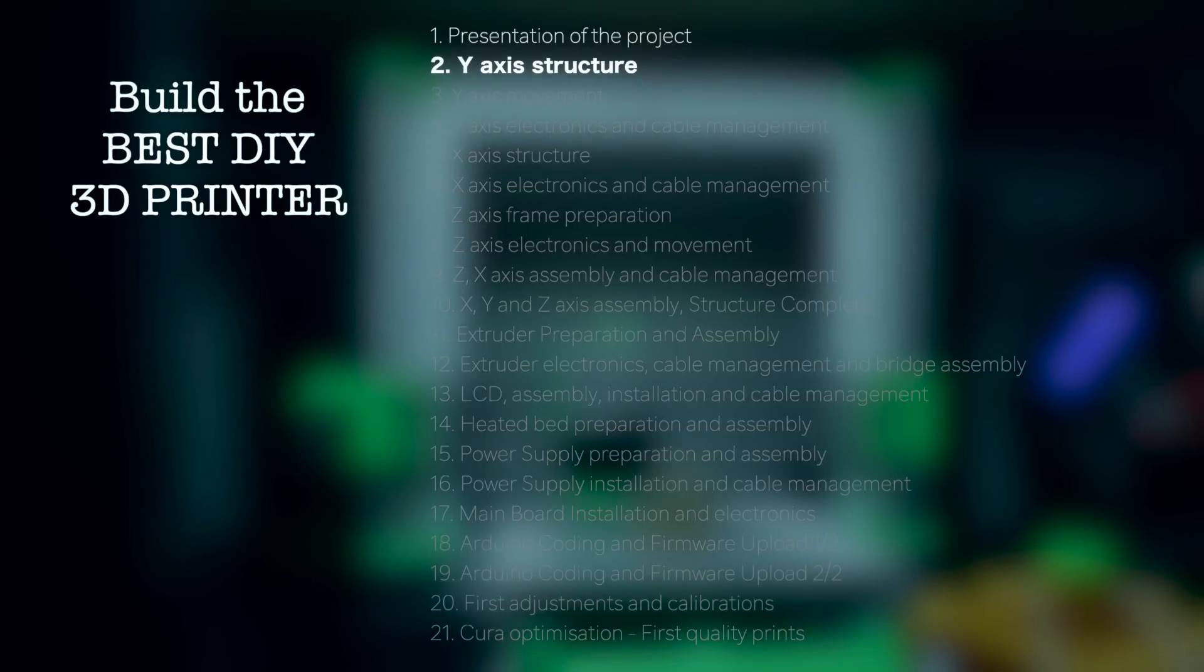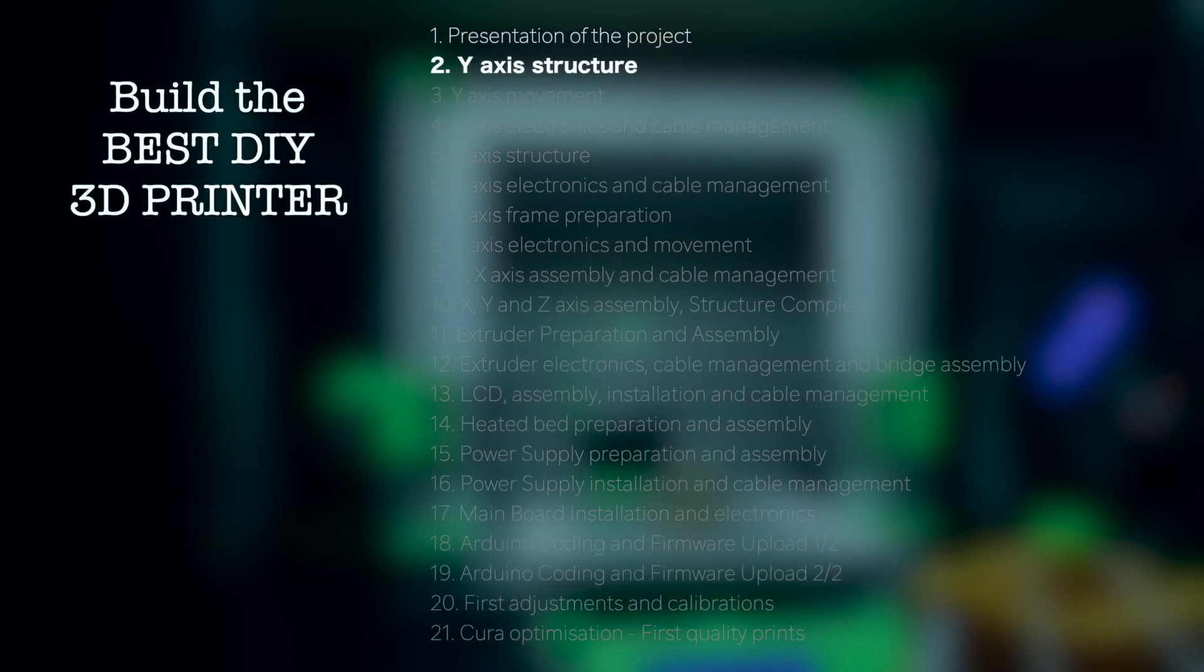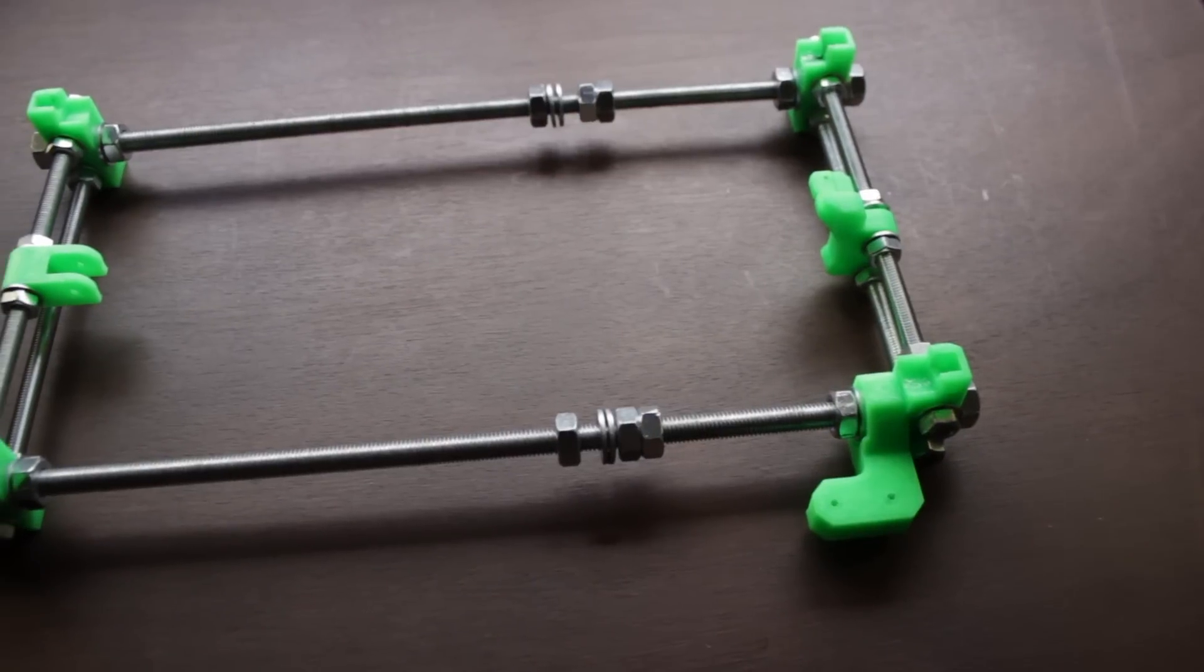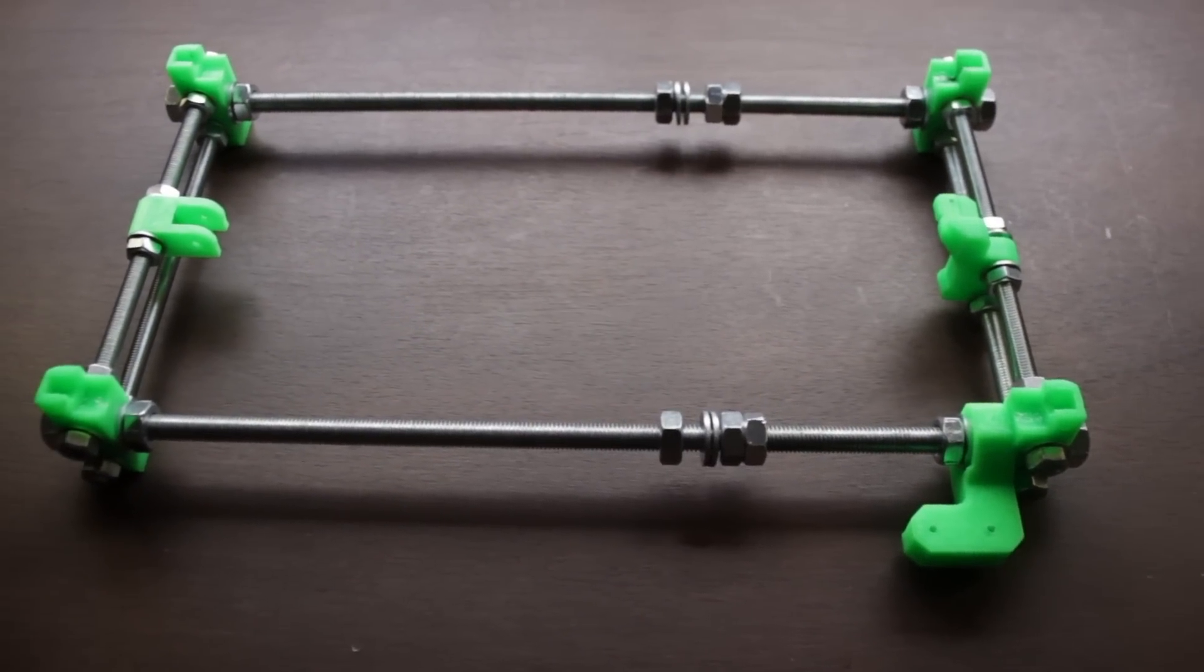Hello guys and welcome back to another video of Architects 3DP. In this second episode of Build the Best DIY 3D Printer, as you may have seen in the title, we are going to build the Y-axis structure. And at the end of the video you will end up having this result.